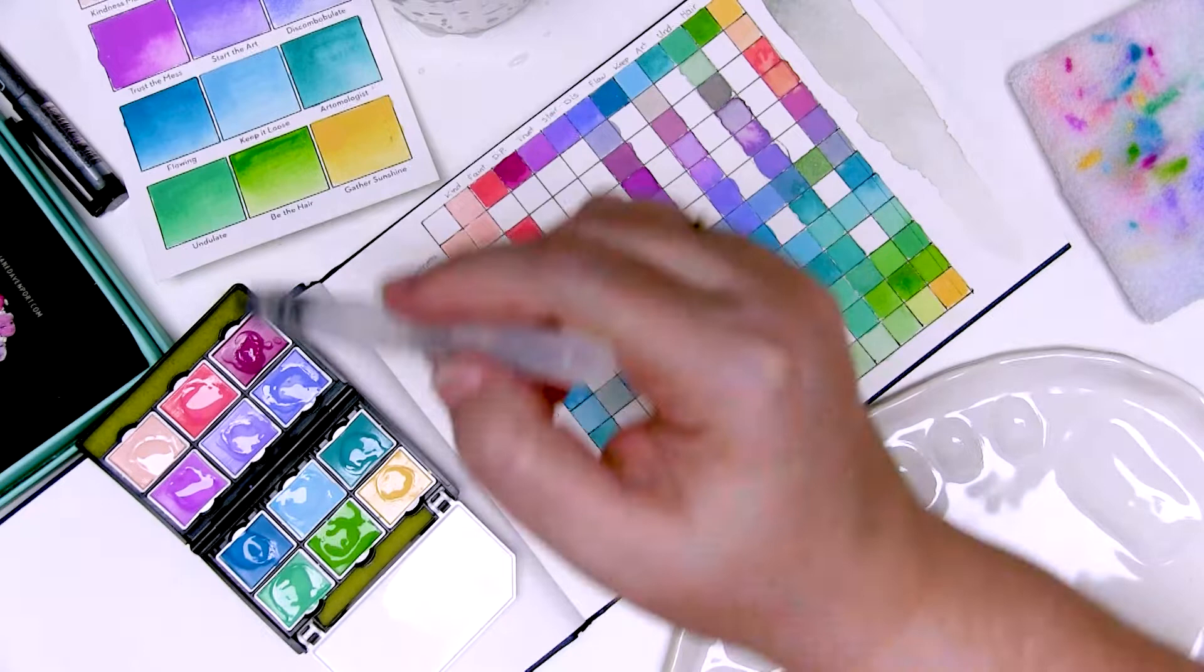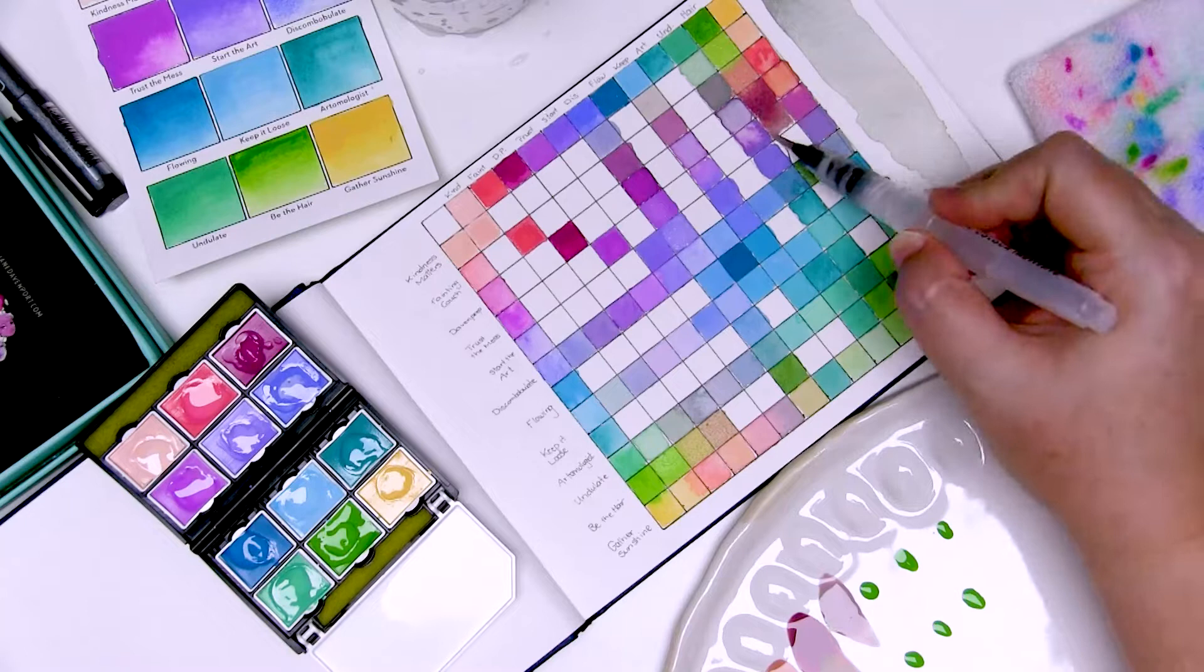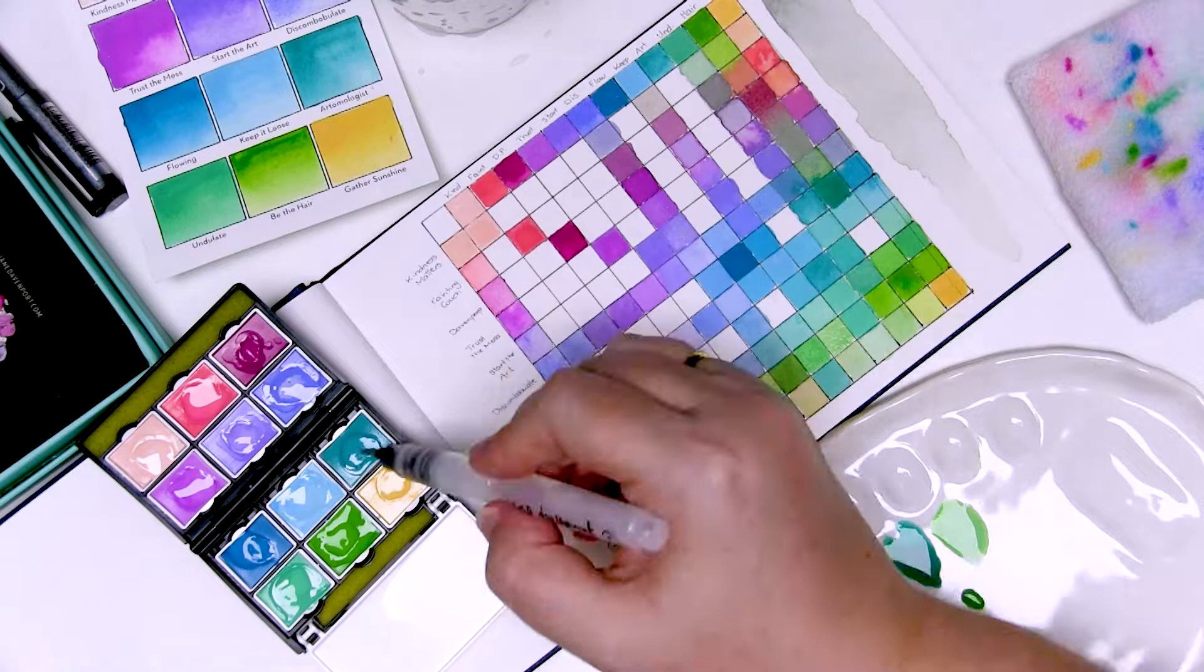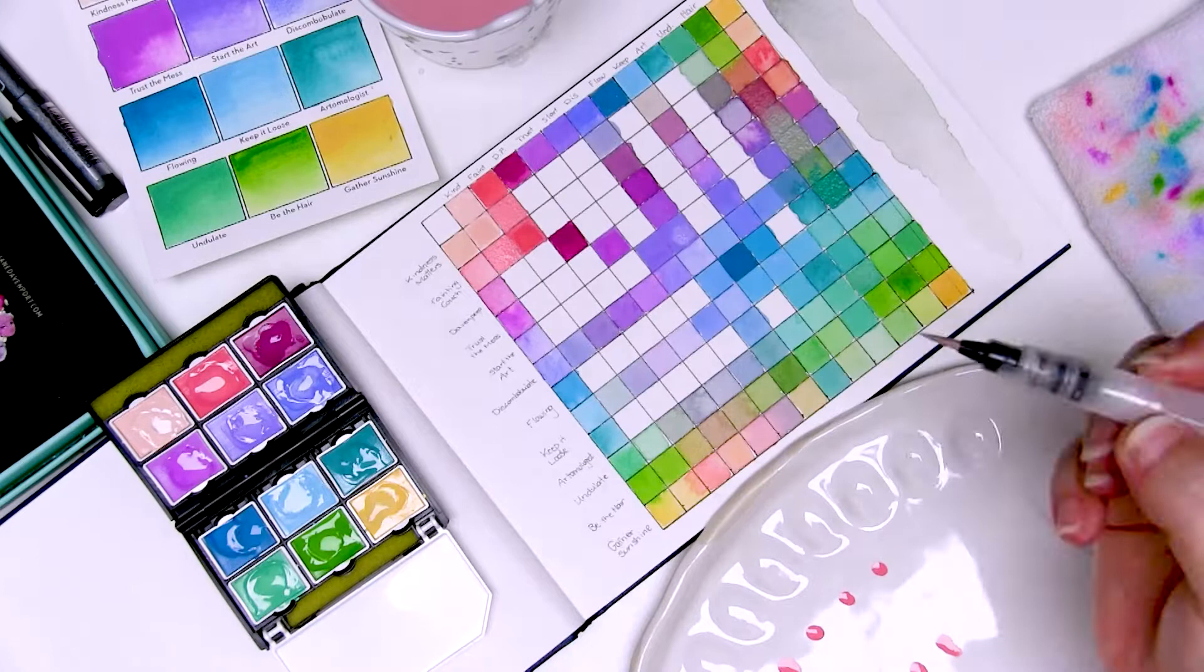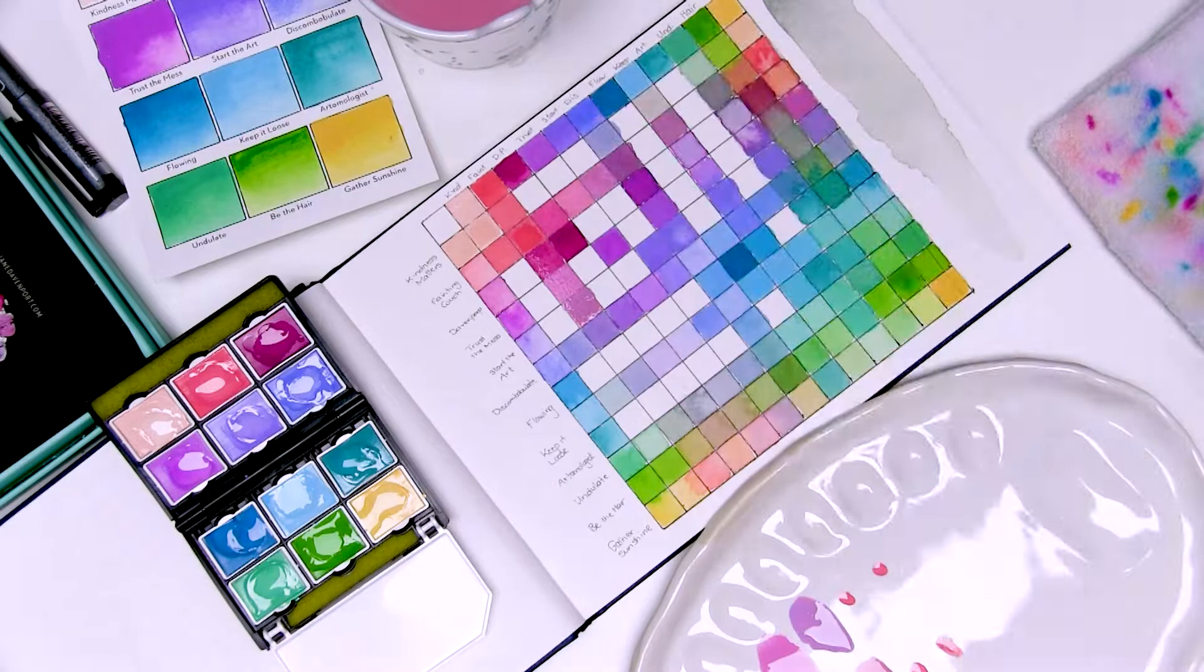Now of course you could do this in a large variety of proportions. So you could mix two parts Trust the Mess to one part Davenport Peep, or three parts Trust the Mess to one part Davenport Peep. So my centimeter by centimeter grid is only showing a small fraction of colors you can actually create by mixing these colors together.